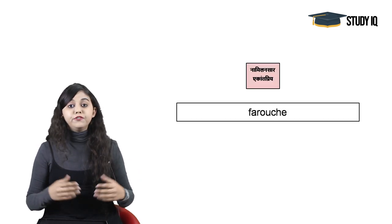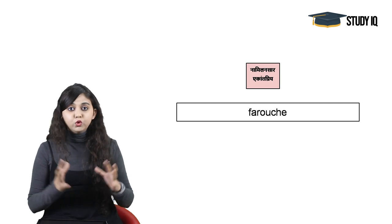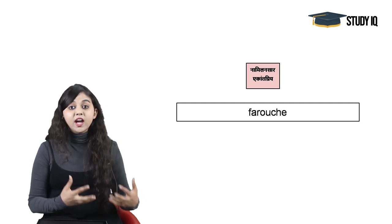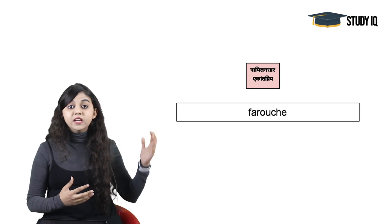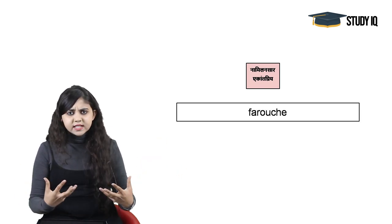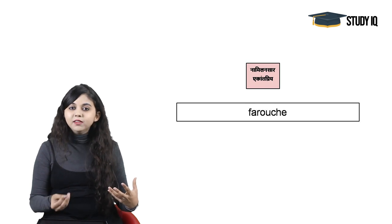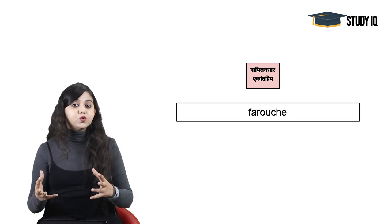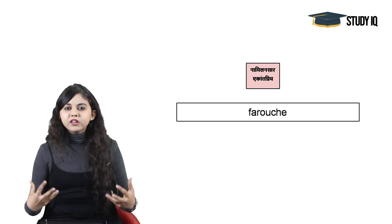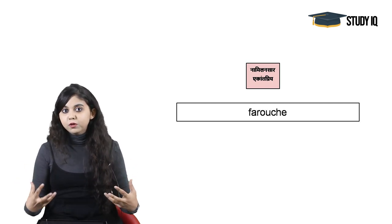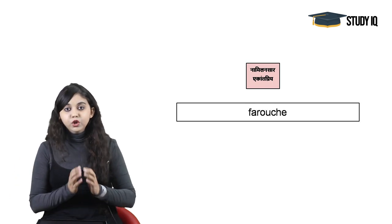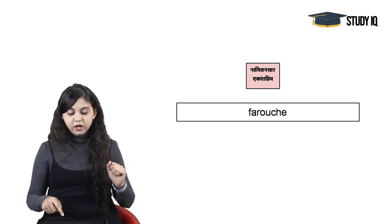Starting with the first word of the day: Farouche. The first word is a shy vyakti — a person that is not milan-saar, a person that does not want to come in front of other people. It is akant priya. And it also means someone who is very fierce, very uncontrollable — you cannot control them. So this first word means akant priya.